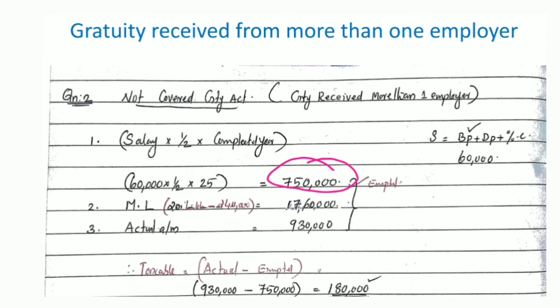Taxable gratuity is actual received minus exempted. Actual received is Rs. 9,30,000 and exempted is Rs. 7,75,000.